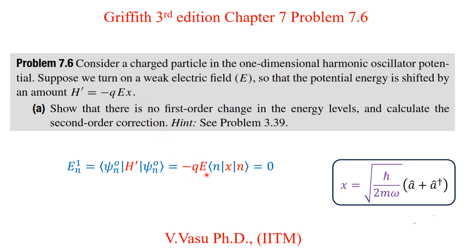We take QE outside since they are constants and not operators. For the harmonic oscillator, the position operator X is defined using the annihilation and creation operators: X = √(ħ/2mω) · (A + A†), where A is the annihilation operator and A† is the creation operator.